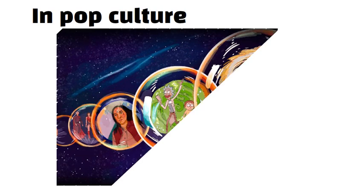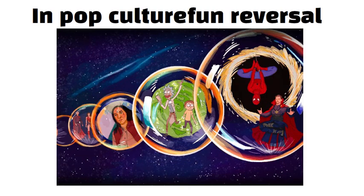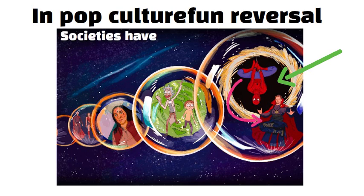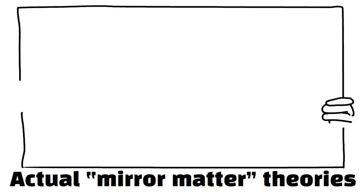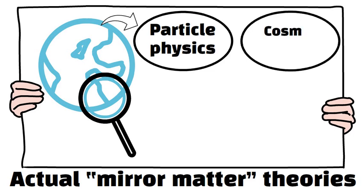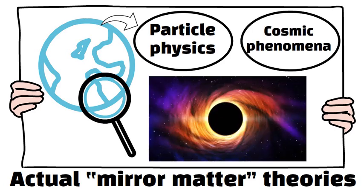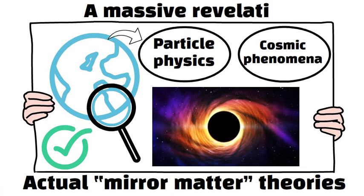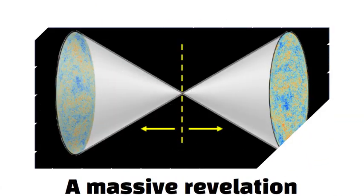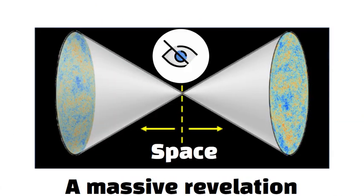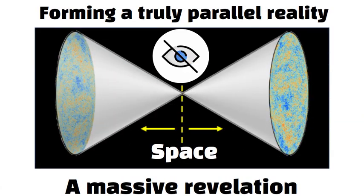In pop culture, mirror universes often involve a fun reversal. The kind hero in one universe becomes evil in another, or societies have opposite morals. But actual mirror matter theories focus more on explaining odd observations in particle physics or cosmic phenomena like dark matter. If proven, it would be a massive revelation: a hidden copy of the world, overlapping our space, yet invisible, forming a truly parallel reality.